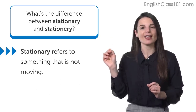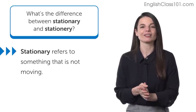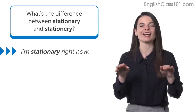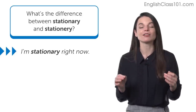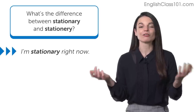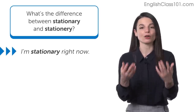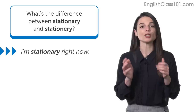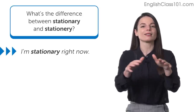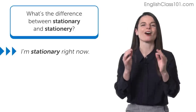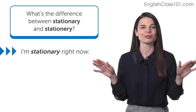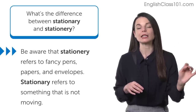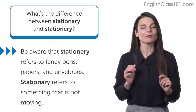On the other hand, stationary with an A refers to something that is not moving. For example, if you're in a car stopped in traffic, you can say 'I'm stationary right now' — meaning you are not moving in any direction. Something in the state of not moving is stationary. So your car, when stopped, is stationary. Or if you're walking through an airport and need to stop for a moment, you are stationary. These are two very different terms: stationery with an E for writing materials, and stationary with an A for the condition of being stopped. I hope this answers your question.